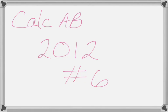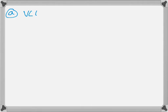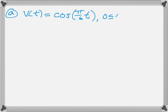This is number 6 from the Calc AB exam in 2012, and it is a particle motion problem. We're given velocity is cosine of pi over 6 times t, where t is between 0 and 12.